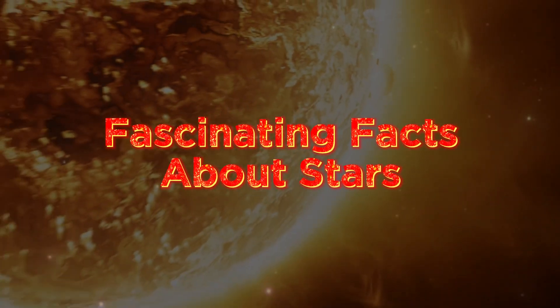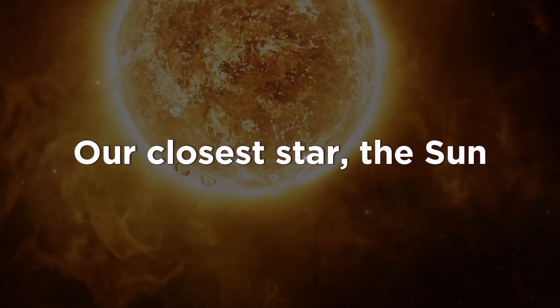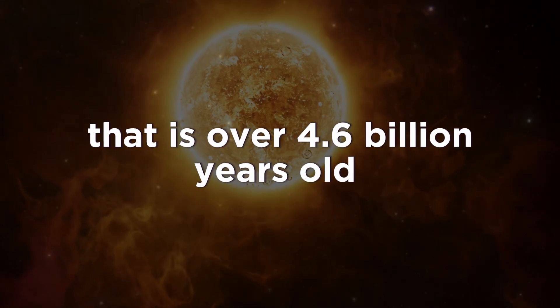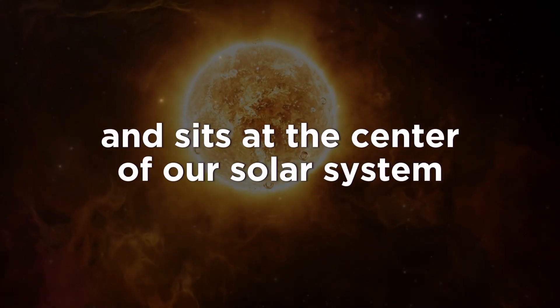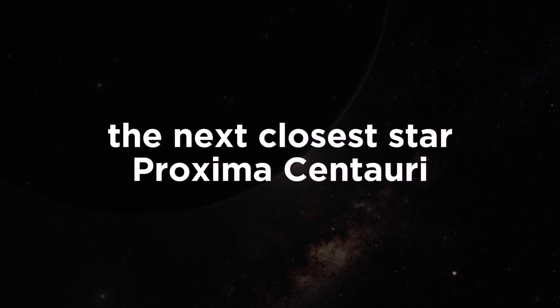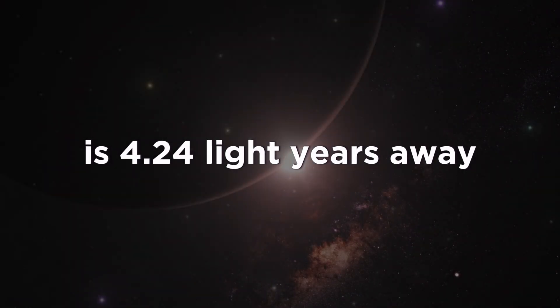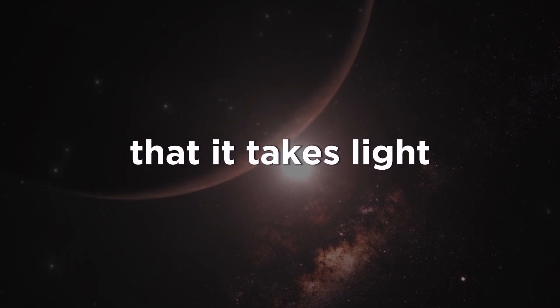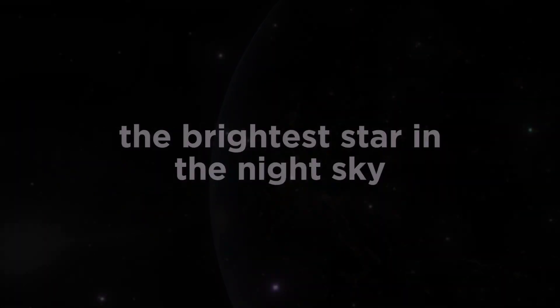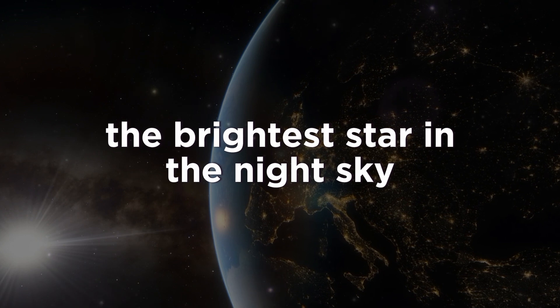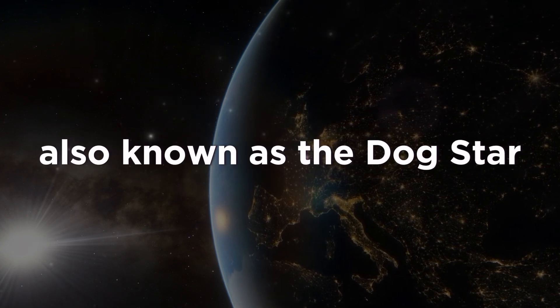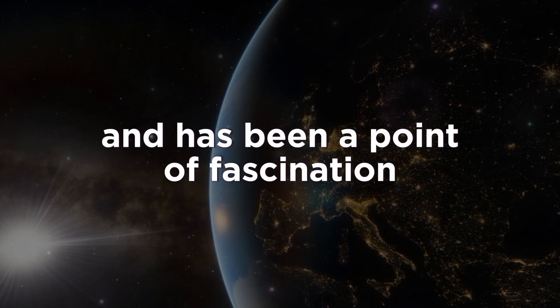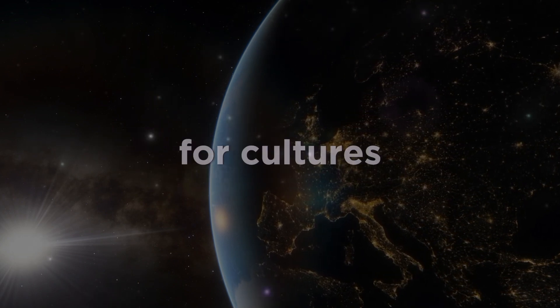Fascinating facts about stars. Our closest star, the Sun, is a yellow dwarf that is over 4.6 billion years old and sits at the center of our solar system. The next closest star, Proxima Centauri, is 4.24 light-years away, a distance so vast that it takes light more than four years to reach us. The brightest star in the night sky, Sirius, also known as the Dog Star, is located in the constellation Canis Major and has been a point of fascination for cultures throughout history.